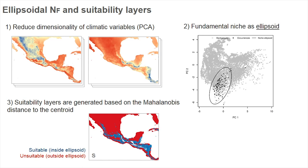This reflects our assumption that the niche has a convex shape. We then create suitability layers for each time period we plan to simulate dispersal movements, using the Mahalanobis distance to the center of the niche. Here in the lower panel we see a binary representation of suitability for the present for Aphelocoma ultramarina.